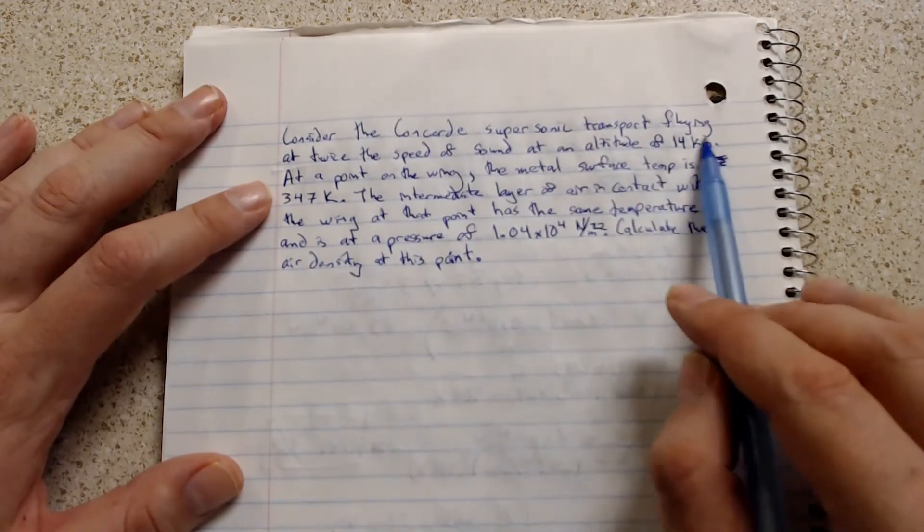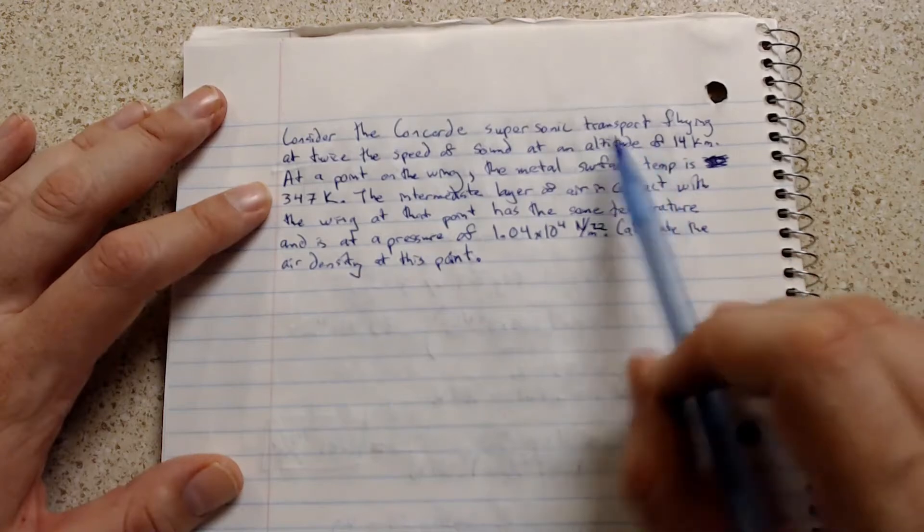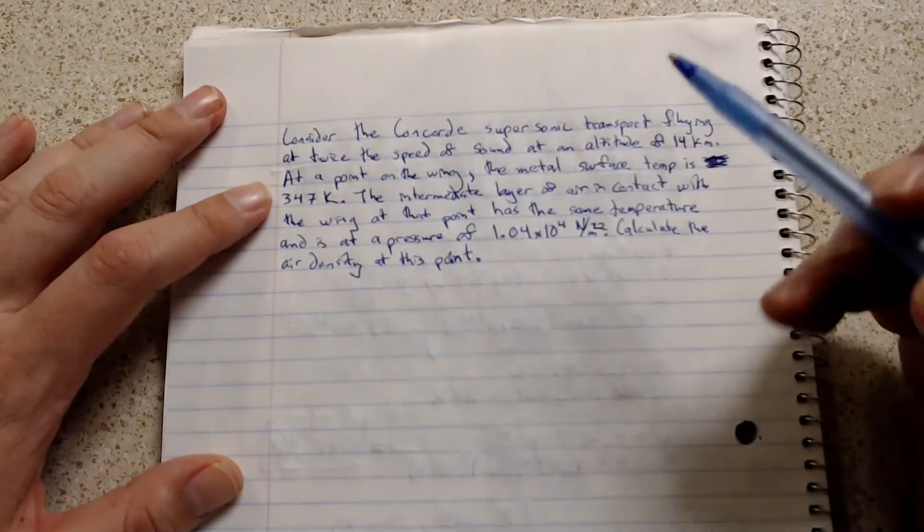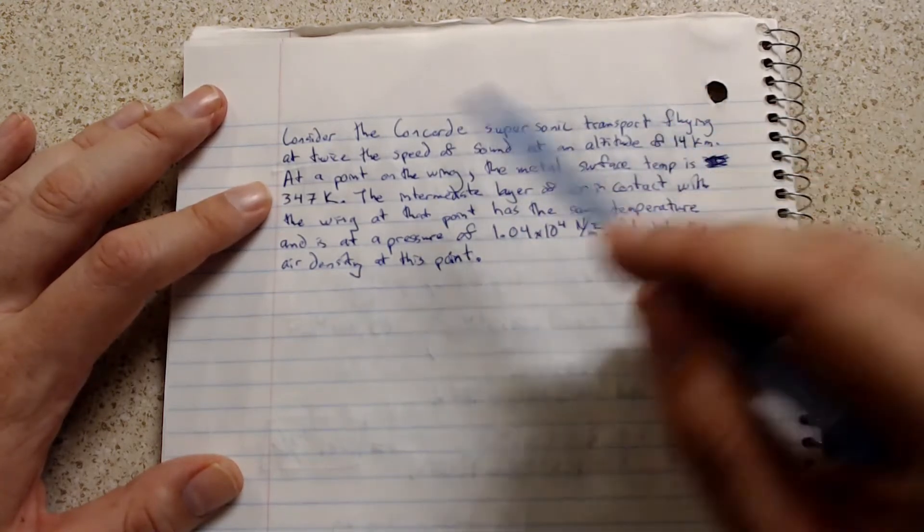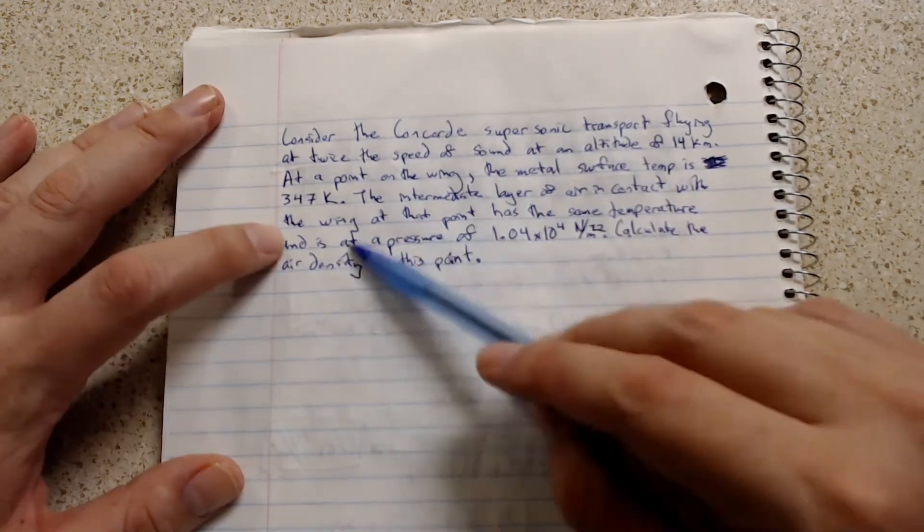Then I'm going to maybe try and figure out do I need to use Bernoulli's to try and take those parameters over to find that point on the wing.